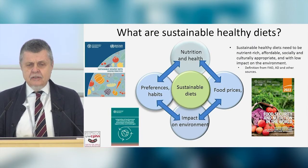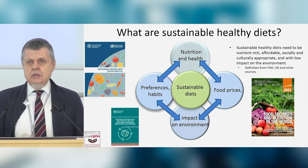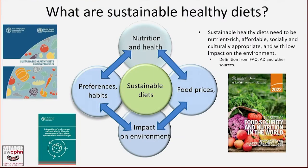There are four dimensions. My paraphrase of the FAO definition: sustainable healthy diets need to be nutrient rich, affordable, socially and culturally acceptable, and with low impact on the environment. So there are four domains: nutrition, economics, society, and the environment — exactly the same four domains that Isabelle talked about this morning.